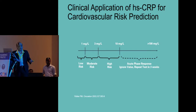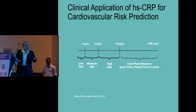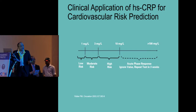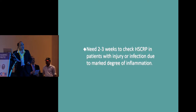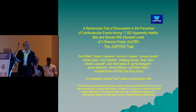If HSCRP is less than 1 mg, the risk is low. Between 1 to 3 mg, it is moderate risk. More than 3 mg is high risk. If it is more than 10, it is not meaningful because a value above 10 mg indicates acute infection, acute inflammation, or acute injury — you must repeat the value after three weeks. More than 20 mg means the patient has some acute infection and you need to repeat the value in three weeks to determine whether it is a response to acute inflammation or otherwise.